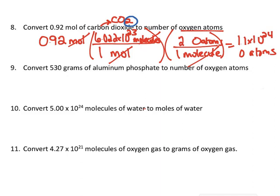Let's look at the next one. They give me 530 grams, and I need to find the number of oxygen atoms. I can never go straight to molecules or atoms from grams — I have to go through moles first. Because I don't know how many molecules are in a gram, but I do know how many molecules are in a mole. So I always say: when in doubt, mole it out. In order to do that, I need to know the molar mass of aluminum phosphate.